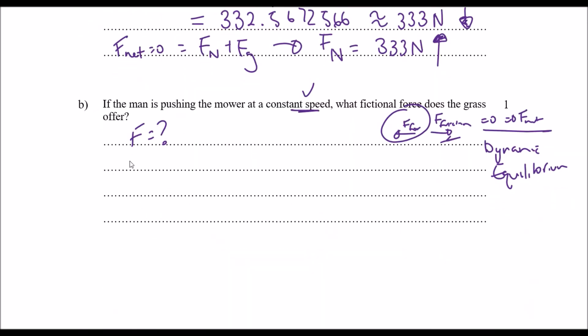So cos theta equals to fx divided by 60. So fx is going to be equal to cos 40 times 60. Plug it into your calculator and see what you get. So I get about 45.96. We'll round that off to about 46.0 newtons and we're going in this direction forwards.